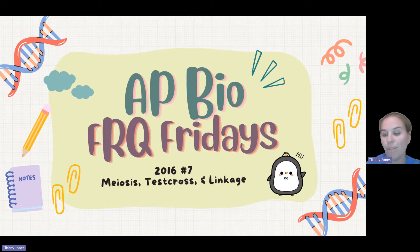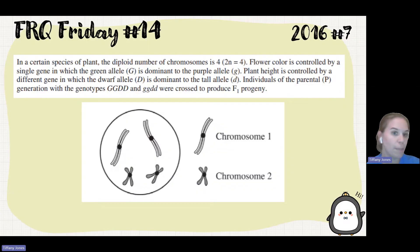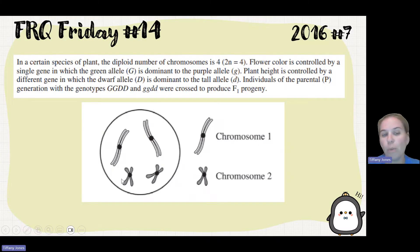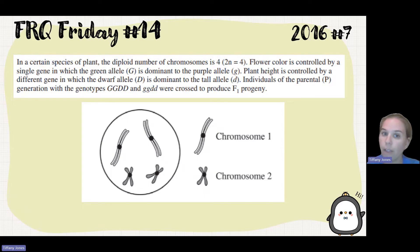Today we're going to review 2016 number 7 on the test: graph and linkage. There is a certain species of plant where the diploid number of chromosomes is 4, meaning there are 2 of chromosome 1 and 2 of chromosome 2. Flower color is controlled by a single gene where the green allele is dominant to the purple allele. Plant height is controlled by a different gene where the dwarf allele is dominant to the tall allele.